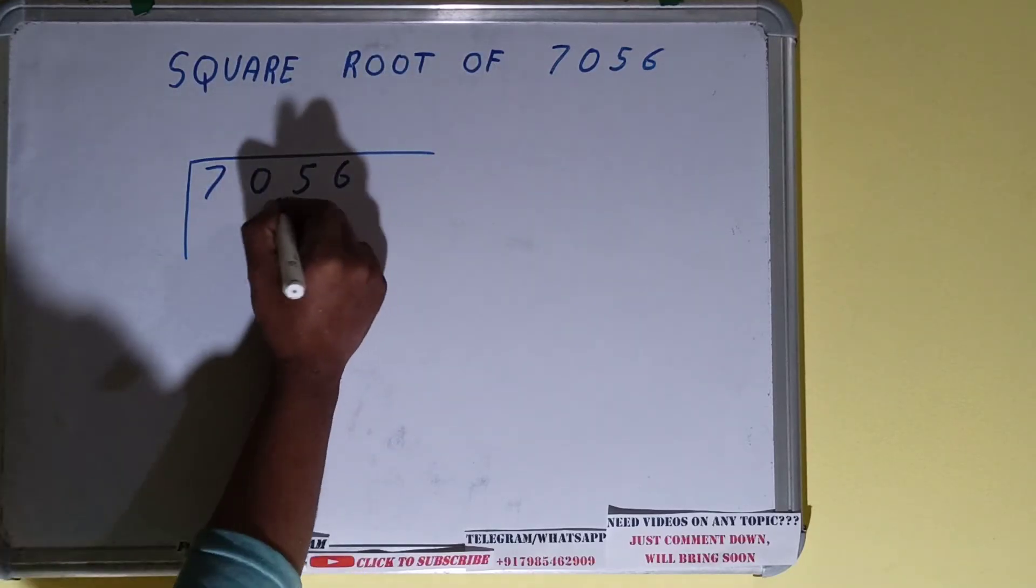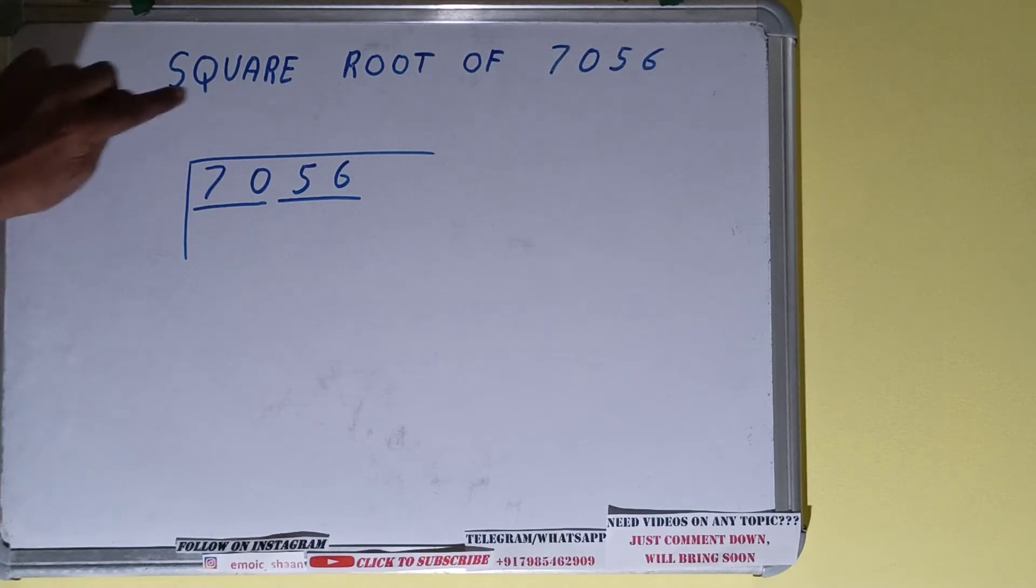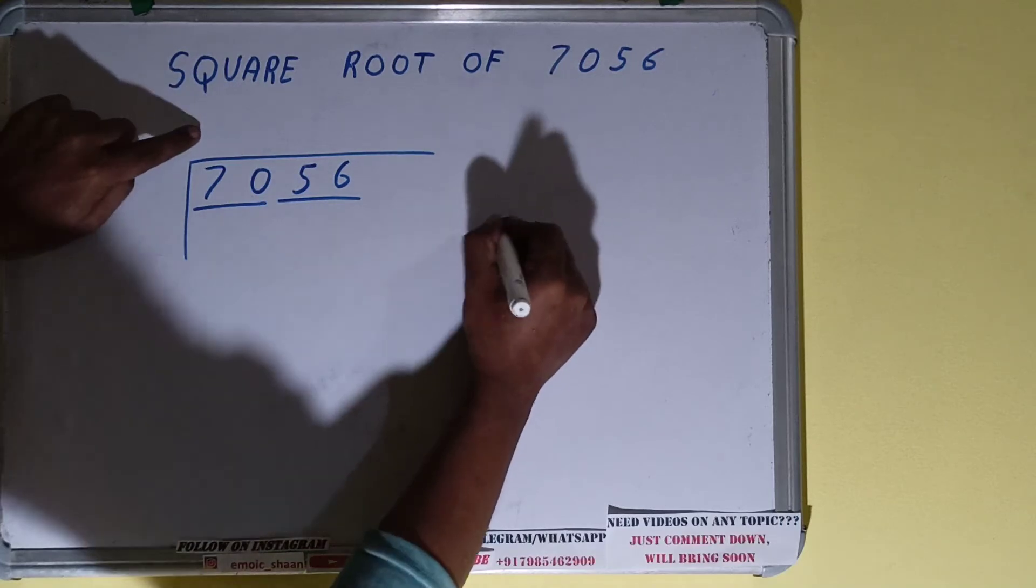The next thing we need to do is form pairs. So one pair is this, another pair is this. Okay, the rule is whatever number we use here, we have to use it here also. So if we use 8 here, you have to use 8 here also.